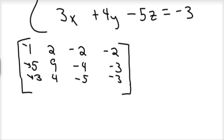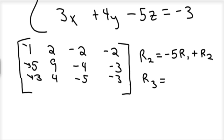To get those two new rows: for row 2, I'm going to take negative 5 times row 1 and add that to row 2. And then for a new row 3, I'm going to take negative 3 times row 1 and add that to row 3 to get a new row.